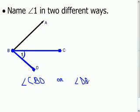Again, the important thing to remember is that the vertex letter where the angle is formed is always the middle letter when you're naming it with three letters.